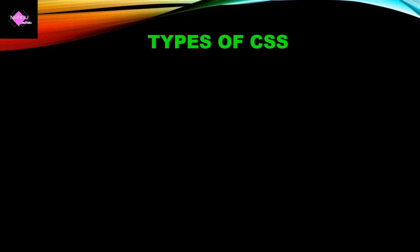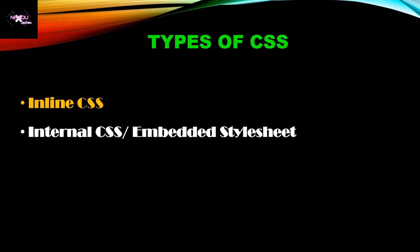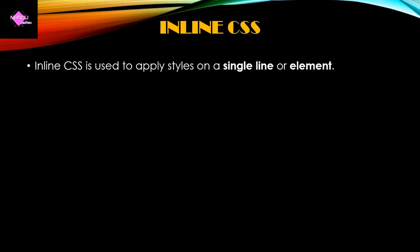Next, we will see the types of CSS. There are three types: the first is Inline CSS, the second is Internal CSS, and the third is External CSS. We will discuss all three types one by one with examples. Inline CSS is mainly used to apply style to a single line, a single statement, or a single element.